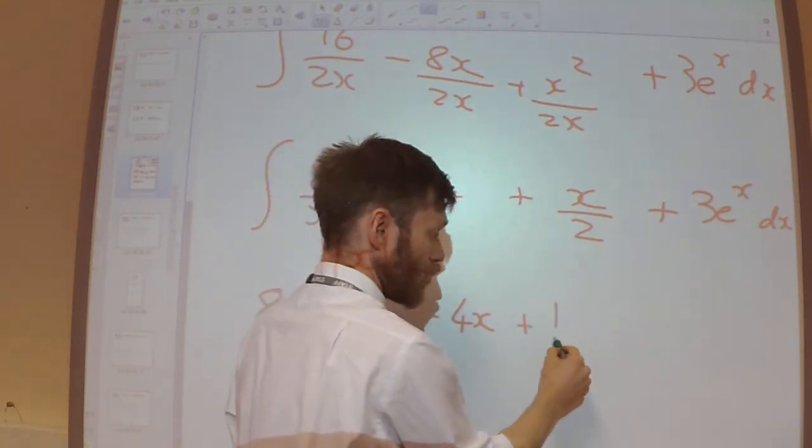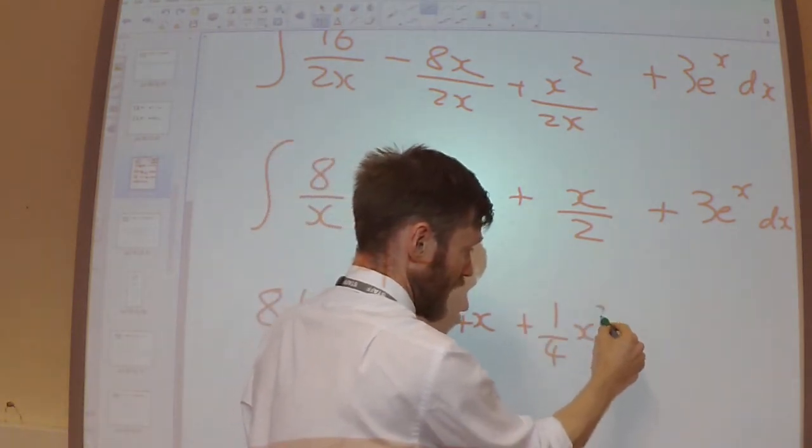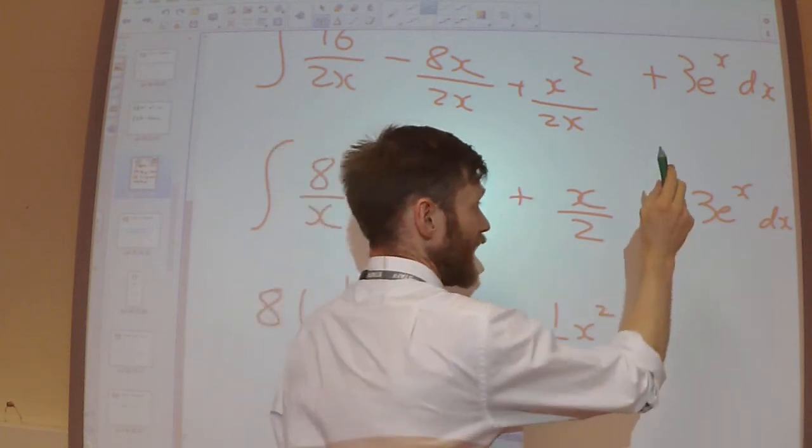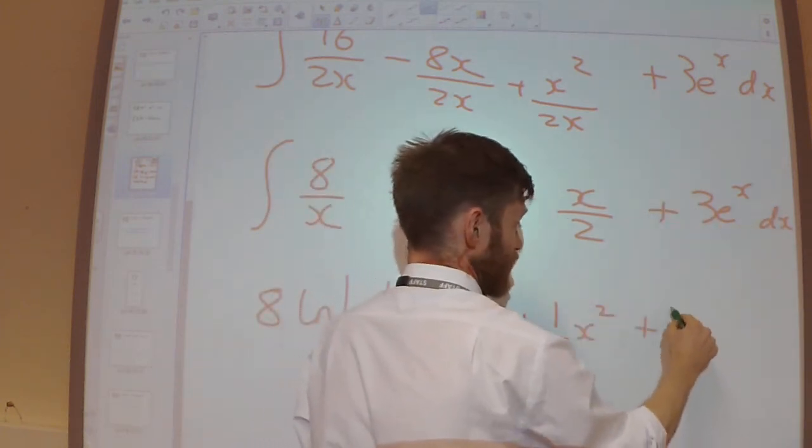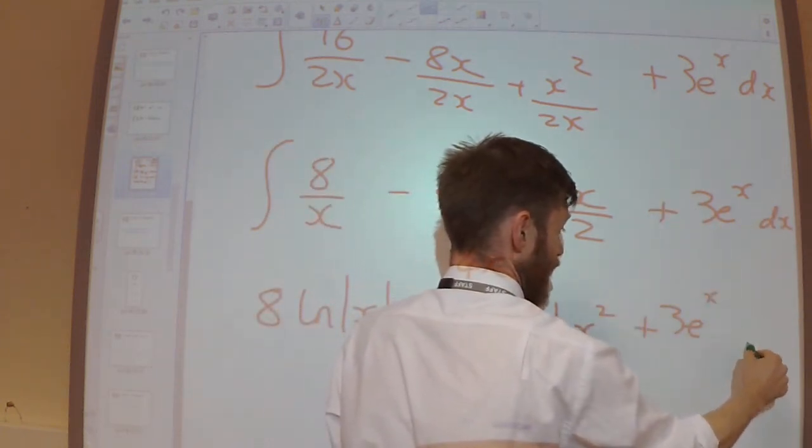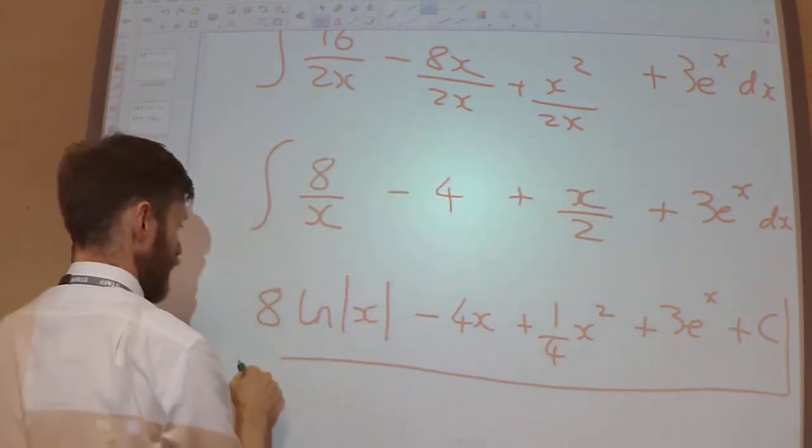4 integrates to be 4x. x over 2 would integrate to be x squared over 2, so this is going to be a quarter x squared. And the 3e to the x integrates to be 3e to the x. Don't forget your constant of integration as well.